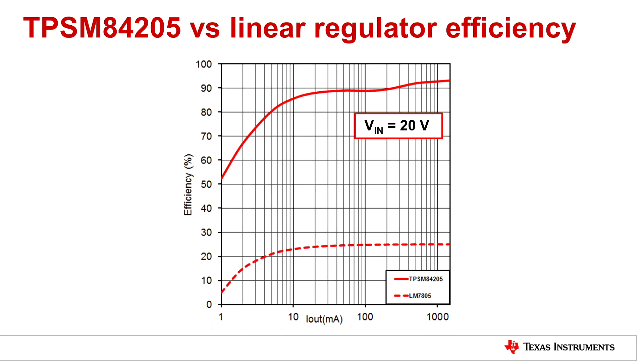And now increasing the input voltage to 20 volts shows the efficiency hit that the linear regulator takes in this condition where the TPSM 84205 remains high.